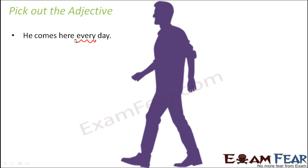What kind of adjective is 'every'? It is not an adjective of quality because it doesn't tell us whether it's a good day or bad day. Is it an adjective of quantity? No. Is it an adjective of number? Yes, to some extent — even though it's not talking about a specific number like ten days or two days, it is talking about something distributive, like each, every, or either. So this is an adjective of number, or a numeral adjective — specifically, a distributive numeral adjective.